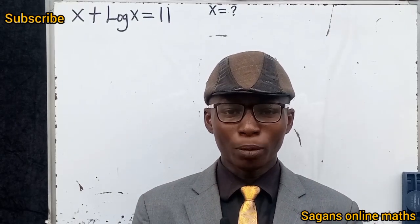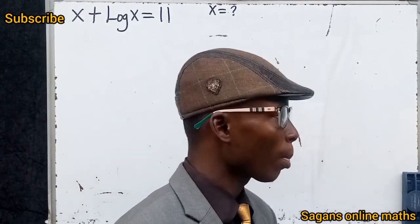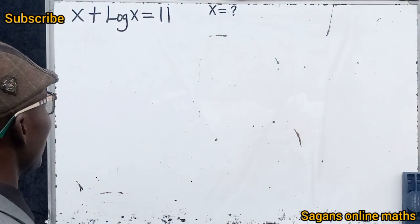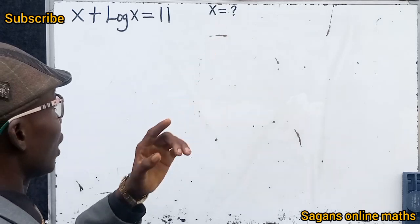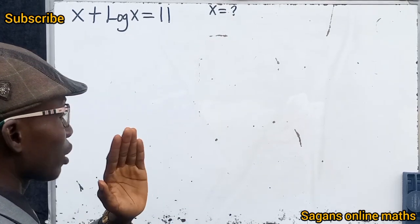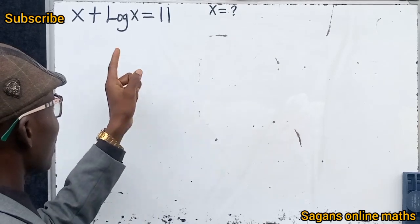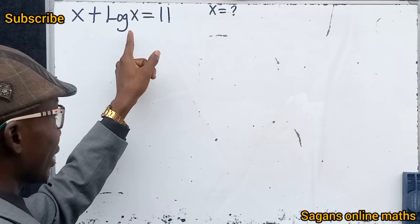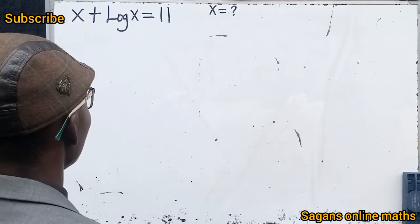Hello everyone, welcome to my channel. Let's solve this simple question on the board. We are given x + log x base 10 equals 11, and we are asked to find the value of x. Remember that any log without a specific base is always in base 10, so log x here is in base 10.